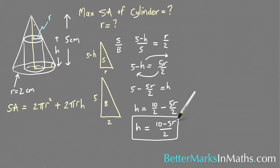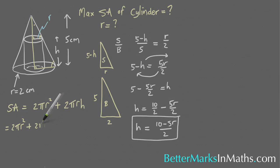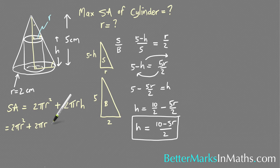So doing that you get the surface area is equal to 2πr² plus 2πr times by (10 - 5r)/2. And then putting that over 1, these 2s will cancel and become 1s.